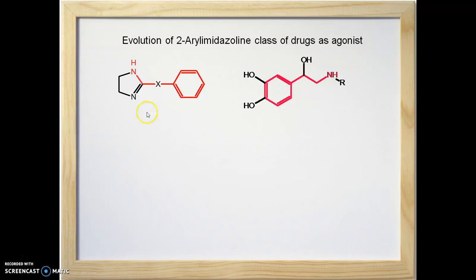When we look at the structure of aryl imidazolines, you will find that the aryl ring and imidazoline ring are separated by a one-atom bridge, and this one atom is linked to carbon number 2 of the imidazoline.